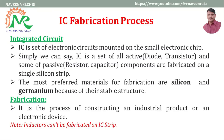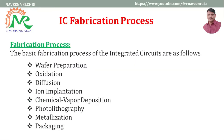The most preferred materials for IC fabrication are silicon and germanium. The fabrication process is the development of components by following a certain number of steps. The fabrication process includes eight steps: wafer preparation, oxidation, diffusion, ion implantation, CVD process, photolithography, metallization, and packaging. These eight steps must be followed in order to complete an integrated circuit.